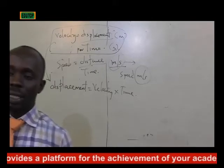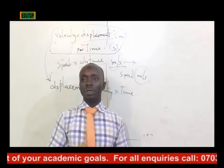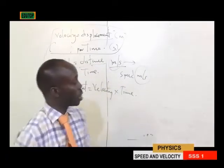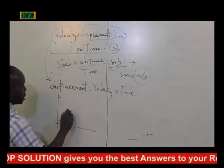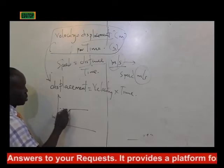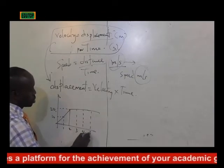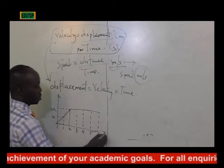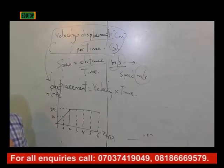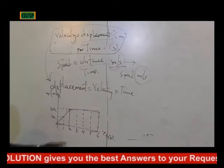They have the same unit but different definitions. From the diagram, if you are told to calculate the total displacement, you find the area of the triangle plus the area of the rectangle. For the triangle: half times base times height — base is 2, height is 20 — giving 20 meters. For the rectangle: length times breadth, where length is 4 (from 2 to 6) and breadth is 20, giving 80 meters.